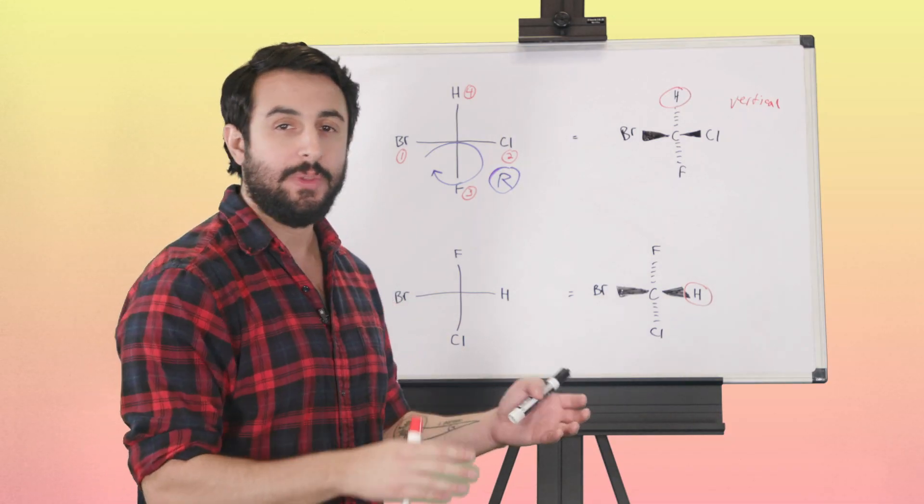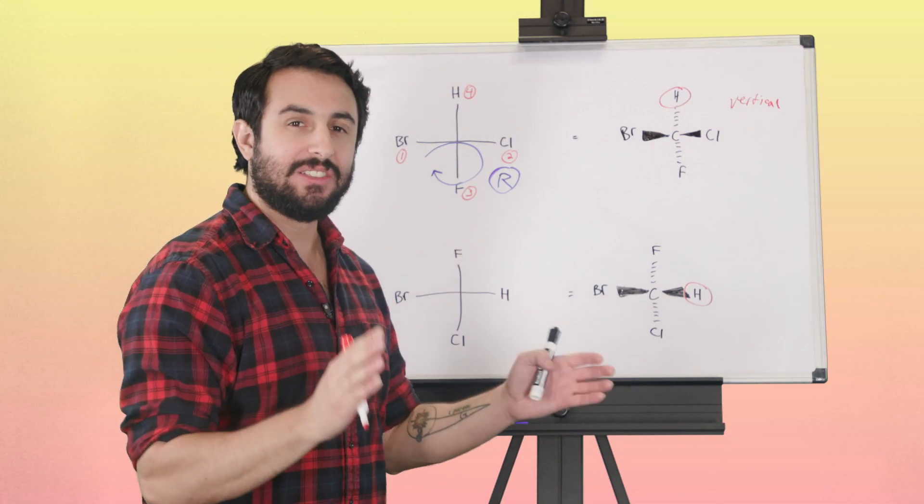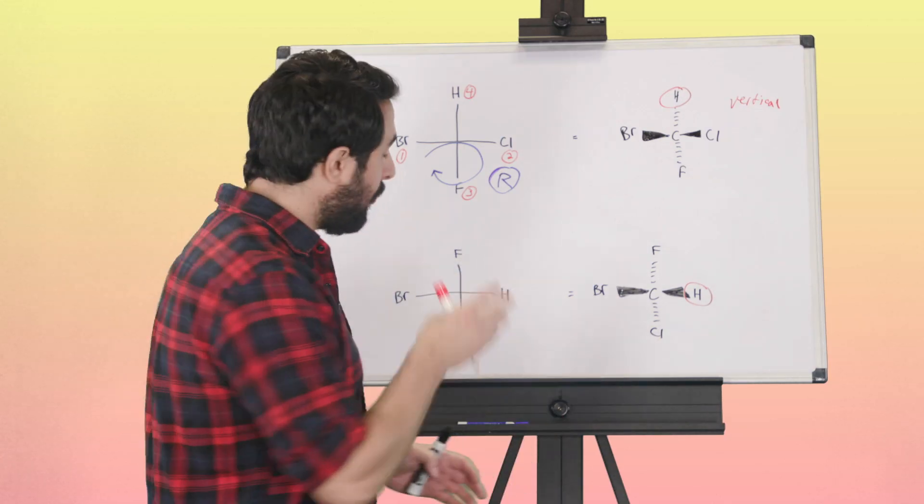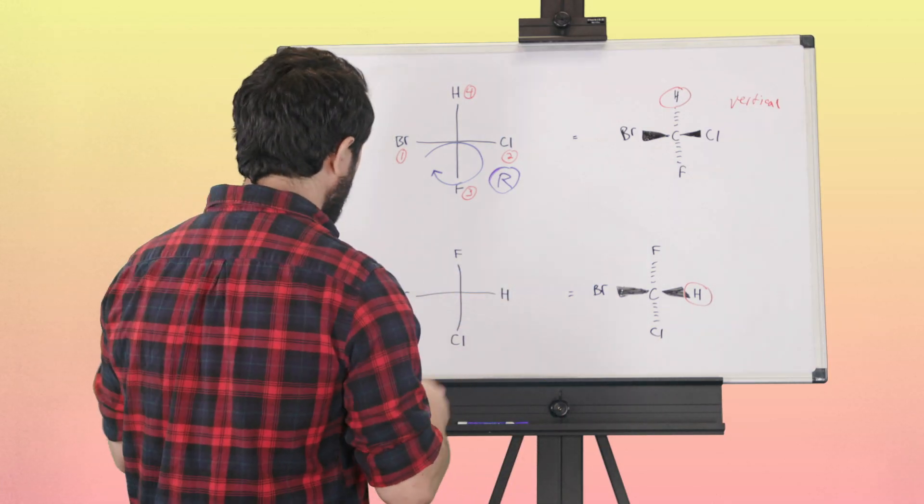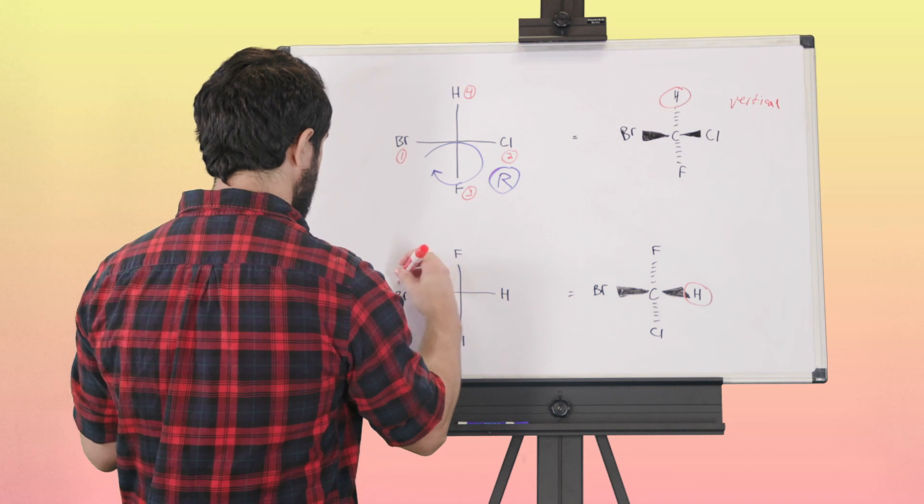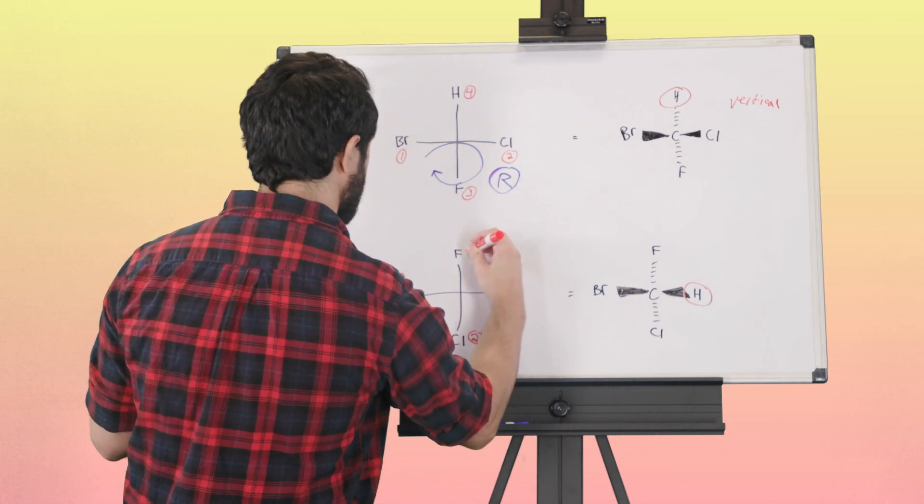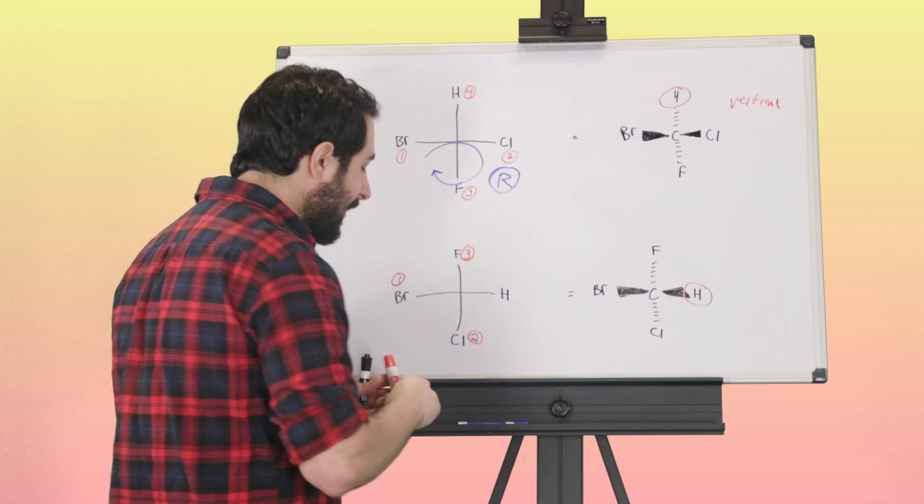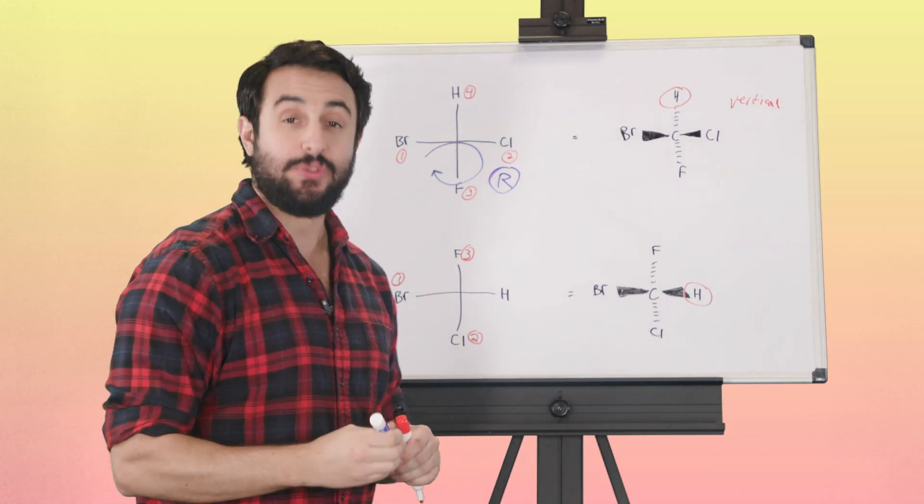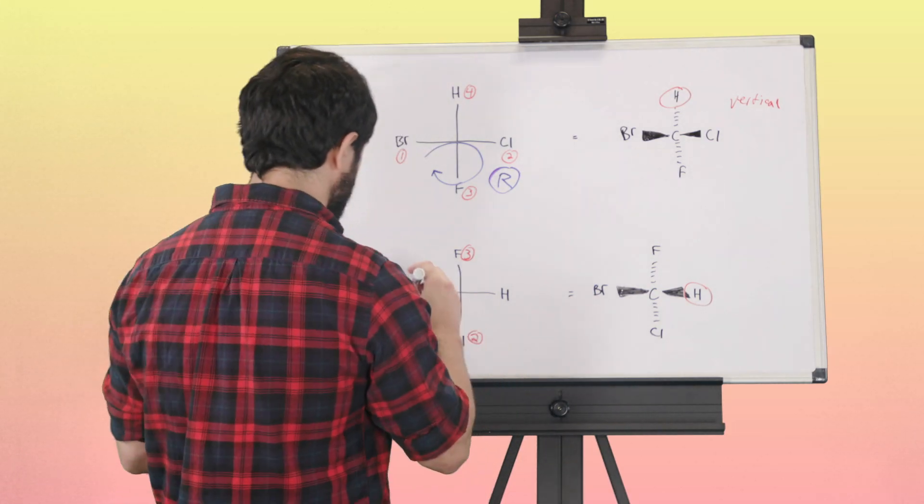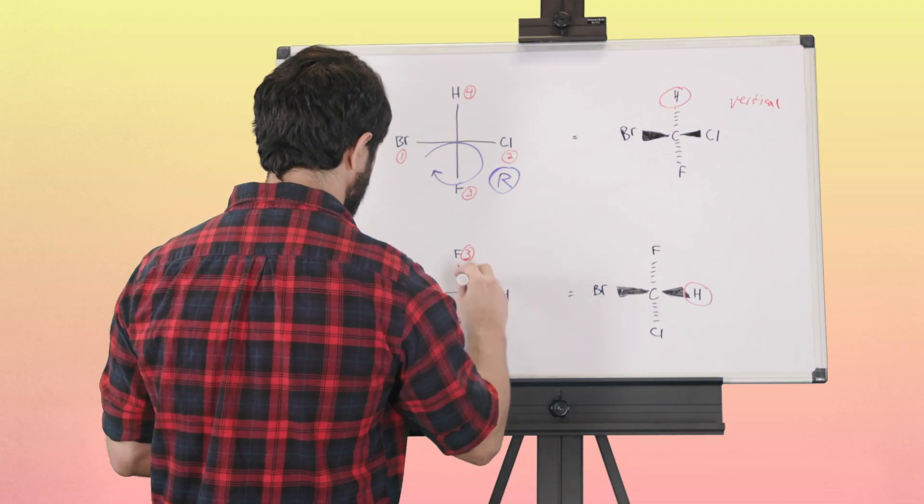We can pretend as though two groups have been swapped, although we don't even have to swap them. We're just going to assign: this is priority one, this is priority two, this is priority three.